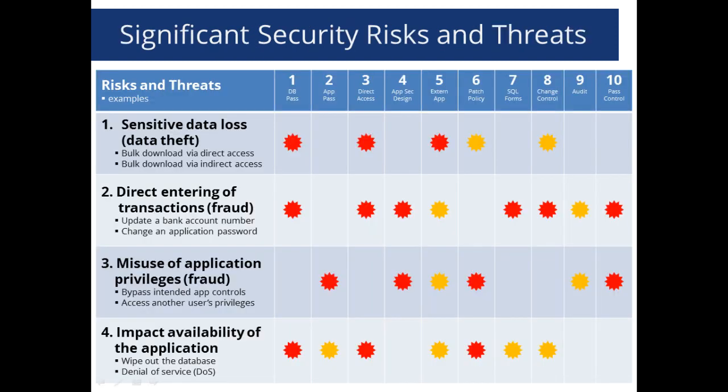Now we look at significant security risks and threats. What we've done is taken the security vulnerabilities and mapped them to specific risks and threats in your environment. For those familiar with formal security training, you know the concept of CIA — not the one in Langley — but confidentiality, integrity, and availability. We looked at those three aspects of security and mapped them to the vulnerabilities we're talking about.